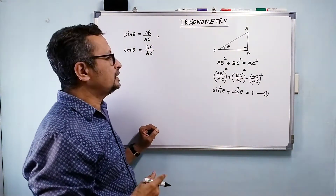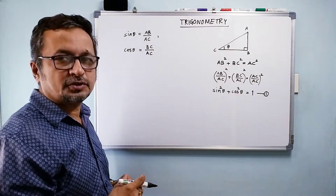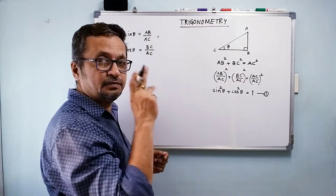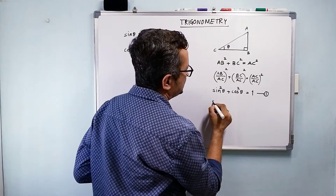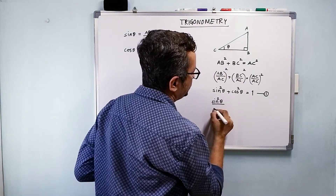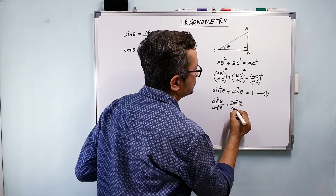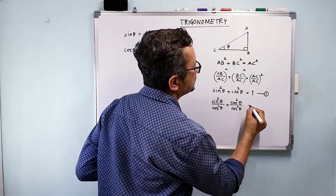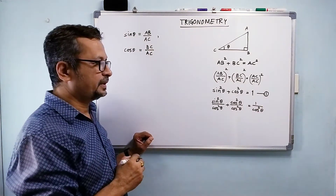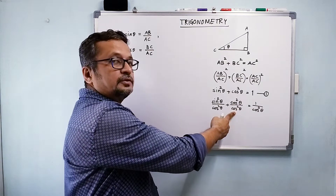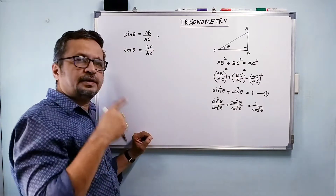Now let us divide both sides of equation 1 by cos²θ. So this is going to be sin²θ upon cos²θ, plus cos²θ upon cos²θ, is equal to 1 upon cos²θ. Obviously, cos²θ upon cos²θ is equal to 1. And sin²θ upon cos²θ — is it not our tan²θ?